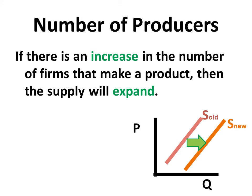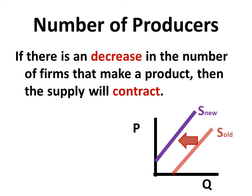We can also think about how the number of producers affects the supply of a good. If there's an increase in the number of firms that make a product, that's going to cause the supply curve to expand. Or if there's a decrease in the number of firms that make a product, that's going to cause the supply curve to contract.